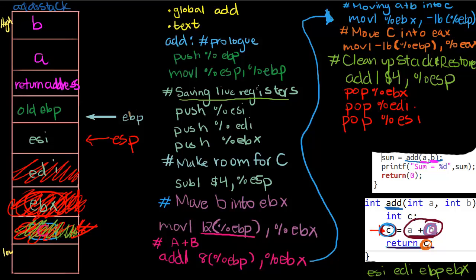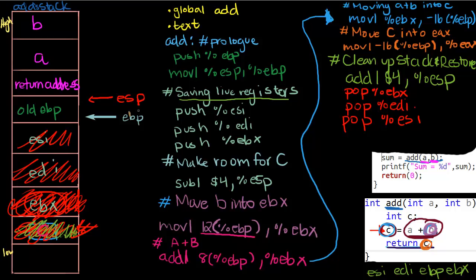And now we'll pop ESI. ESI will no longer be part of our stack. Why? Well, because the stack is everything ESP and above. ESP is now back to where we had it when we were in the prologue, right? EBP and ESP are now pointing to the same thing after we restore our values and clean up our stack. We're back, and we have our answer in EAX.